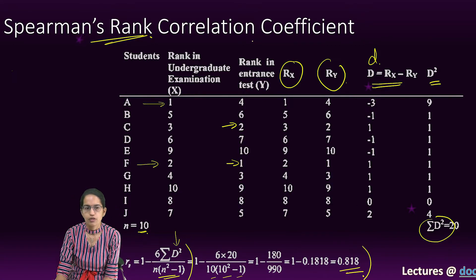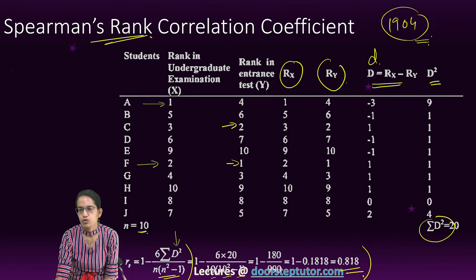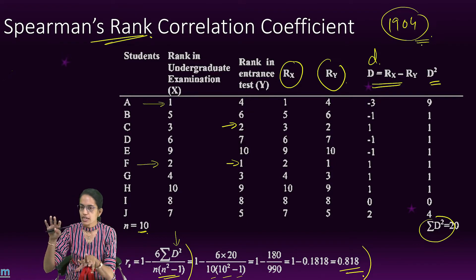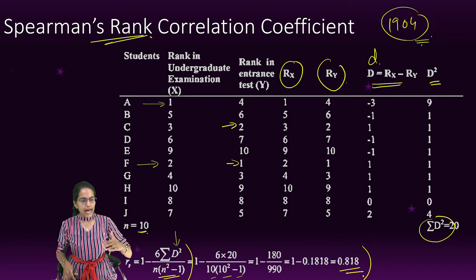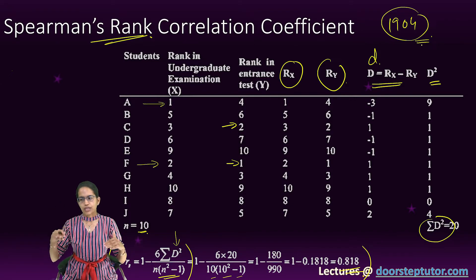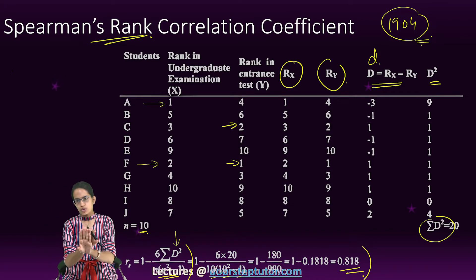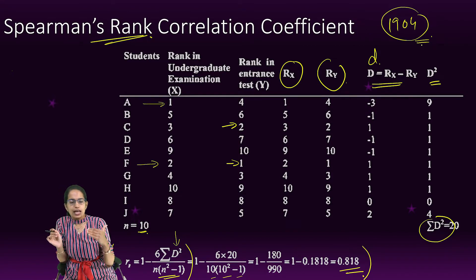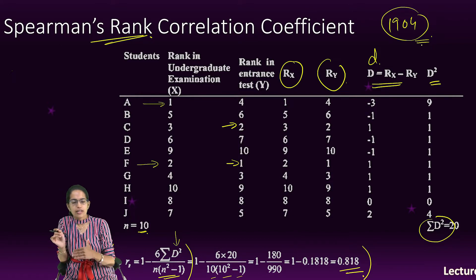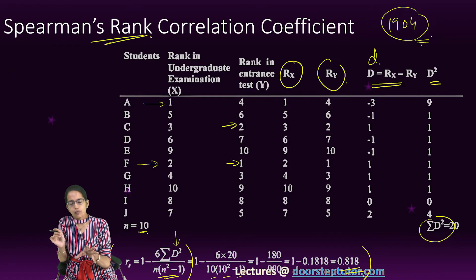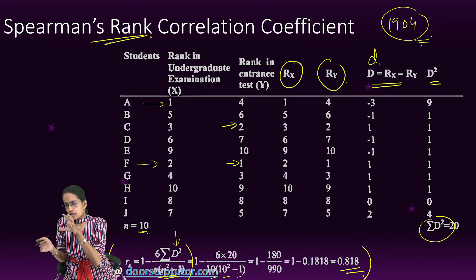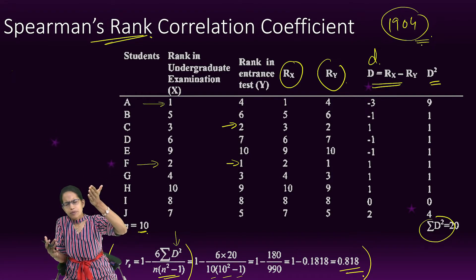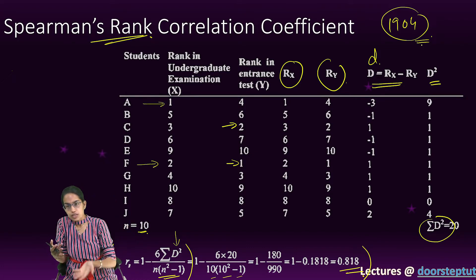Spearman developed this correlation in 1904. His idea was to find out intelligence when judged by two persons — there can be variations when two judges rank individuals' intelligence levels. Each judge ranks who is more intelligent, then we compare the two sets of ranks, find the differences, square them, sum them, and use the formula 1 minus 6Σd² divided by n(n²-1). Note that the person performing best is ranked 1 and the person performing worst is ranked last.